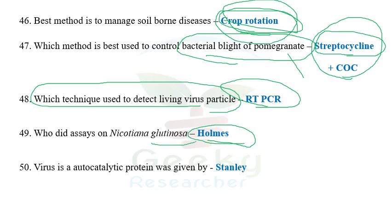The next question: who did assay on Nicotiana glutinosa? Holmes did the local lesion assay on Nicotiana glutinosa. Local lesion assay was given by Holmes in 1929, and he also discovered viral hypersensitivity. Fungal hypersensitivity was discovered by Stakman, bacterial hypersensitivity by Klement, and viral hypersensitivity by Holmes in 1929. In the local lesion assay, the chemical used is carborundum powder, which is chemically called silicon carbide — also an important point.